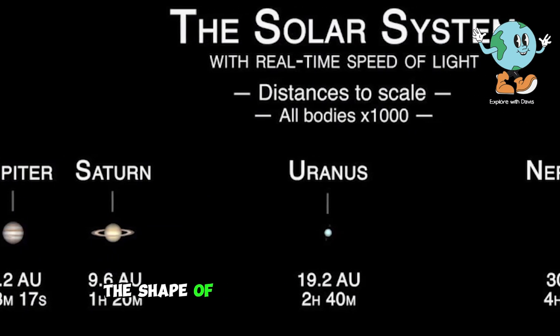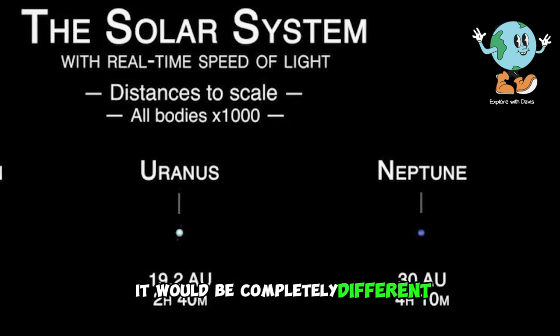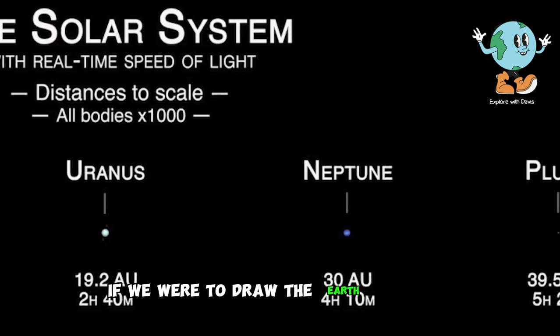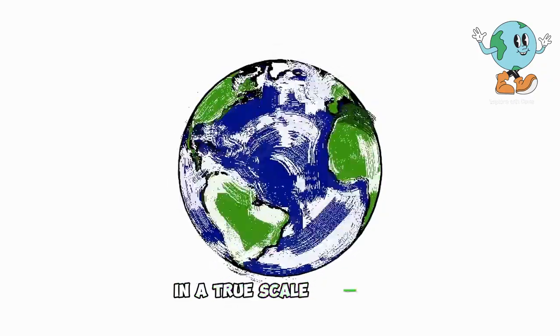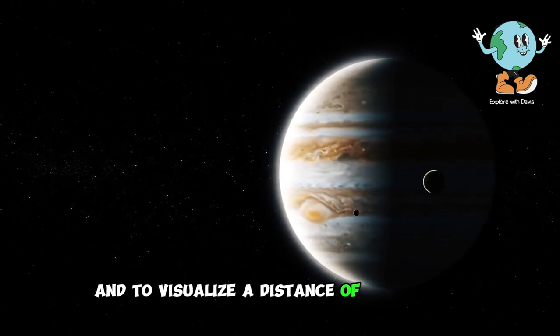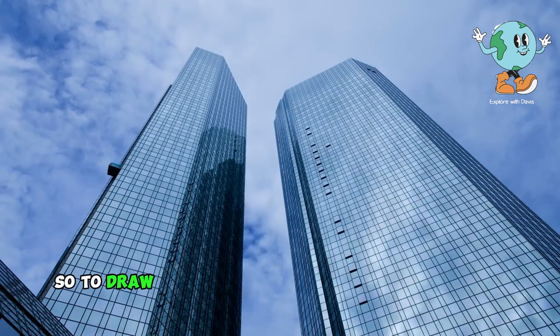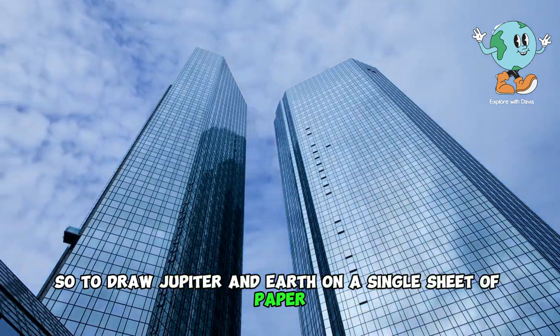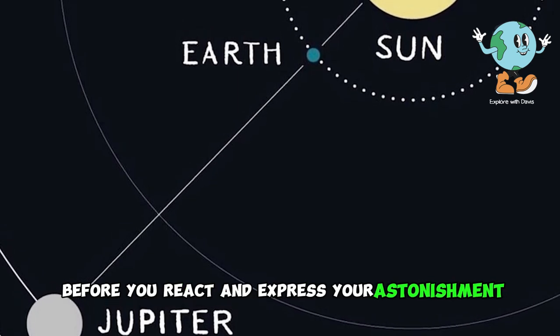If we tried to replicate the shape of the solar system on paper according to a true scale, it would be completely different. For instance, if we were to draw the Earth on paper and make its size comparable to that of a pea, Jupiter would be about 300 meters away from that pea. And to visualize a distance of 300 meters, imagine a 100-story building. So to draw Jupiter and Earth on a single sheet of paper, you would need a paper that is 100 stories tall.